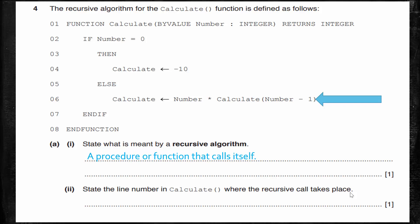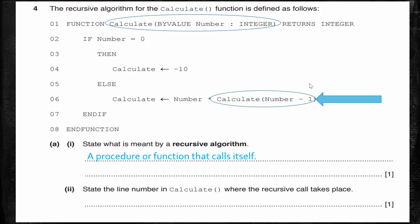Next it asks us to state the line number in calculate where the recursive call takes place. The function is called calculate and accepts one parameter, number, as an integer. Looking at the code, we can see that on line six we have calculate followed by the parameter being passed — so the recursive call takes place on line 06.